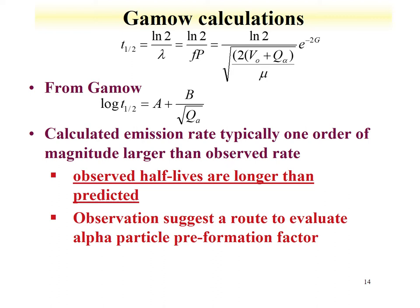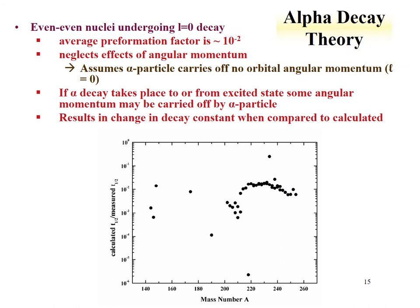The pre-formed alpha is a way of reconciling calculations and observed data. We just use the preformation factor as a fix to what we observe. We can evaluate the difference between calculated and measured half-life. This figure is shown for even-even nuclei — these tend to be ground state to ground state transitions. The average preformation factor is about 10^-2.